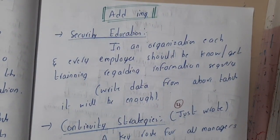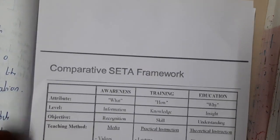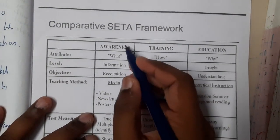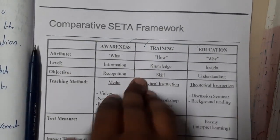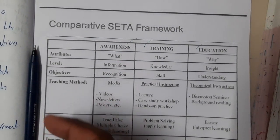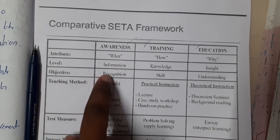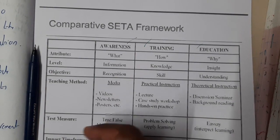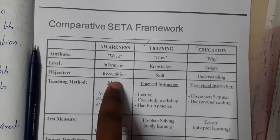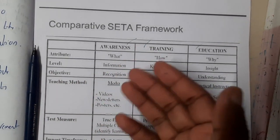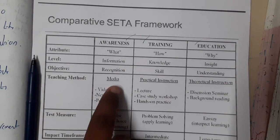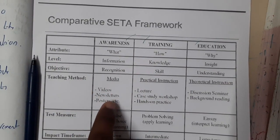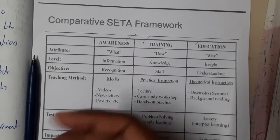The SETA framework depends on three components: Awareness, Training, and Education. Awareness is at the informative level — the objective is to recognize things. The teaching model for awareness is videos, newsletters, and posters — media formats through which you observe and understand what is being taught.